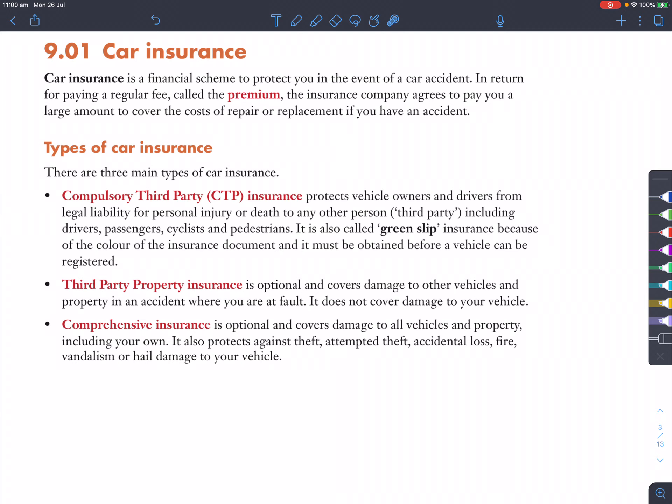Then the third one is comprehensive insurance. This is by far the most expensive and the best one. It is optional but covers damage to all vehicles and property, including your own, which is really good. So if you have an expensive car, having the comprehensive insurance is safe. It also protects against theft, attempted theft, accidental loss, fire, vandalism, or hail damage to your vehicle, which is very important.